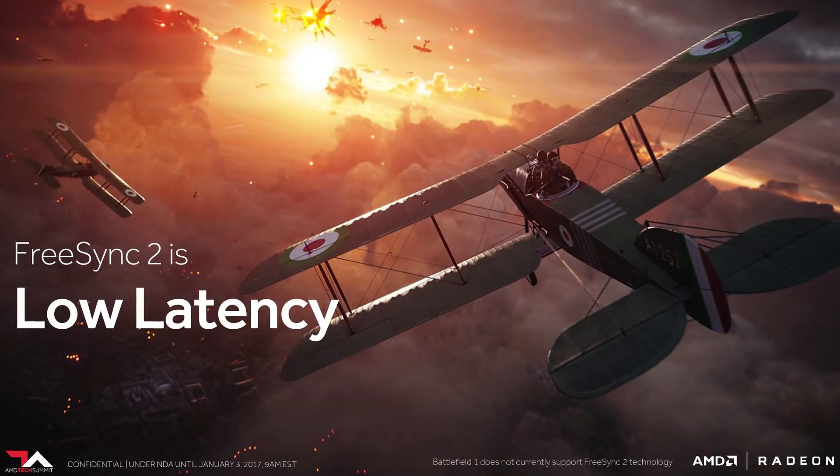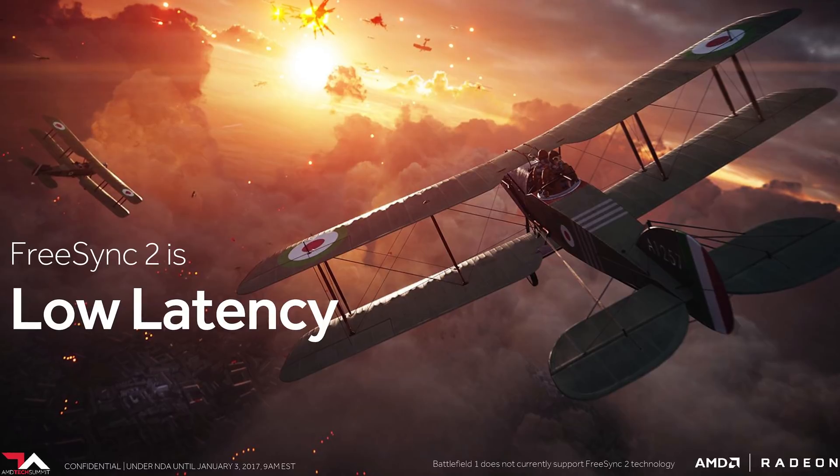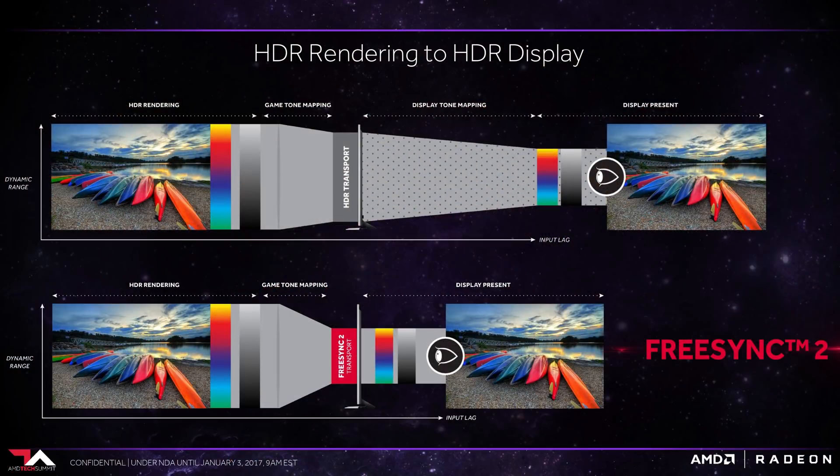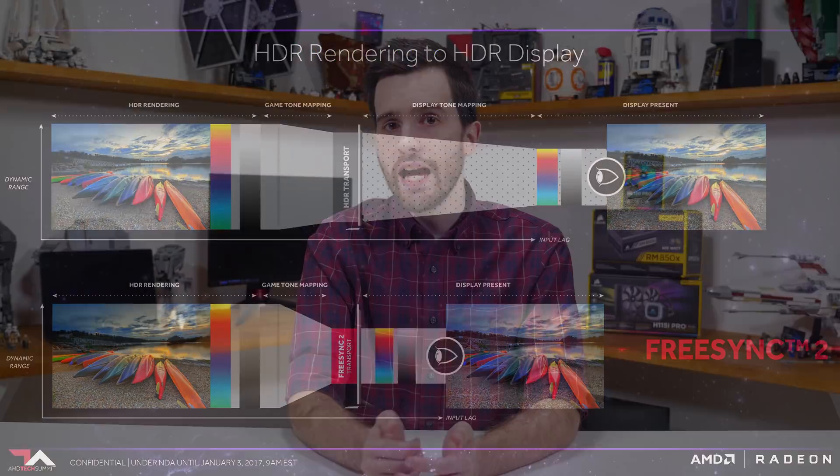The second main FreeSync 2 feature is reduced input latency. HDR processing pipelines have historically introduced a lot of input lag, particularly on the display side. However, FreeSync 2 stipulates low latency processing for both SDR and HDR content. AMD hasn't published a specific metric they're targeting for input latency, but it's safe to say 50 to 100 milliseconds of lag like you might get with a standard HDR TV would not be acceptable for a gaming monitor.